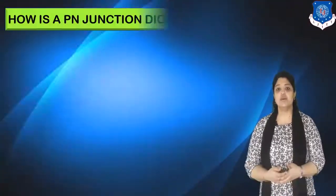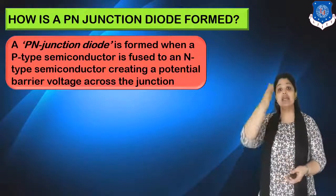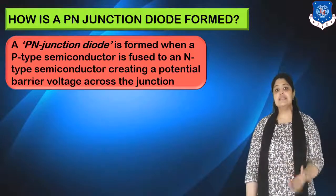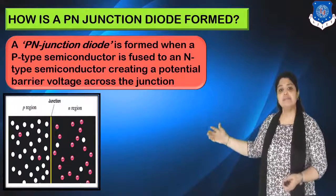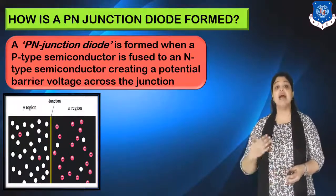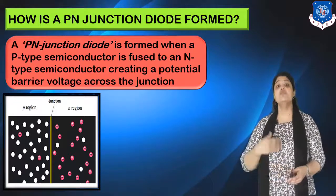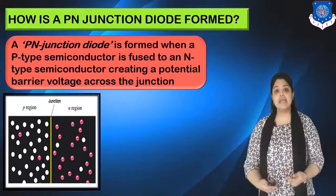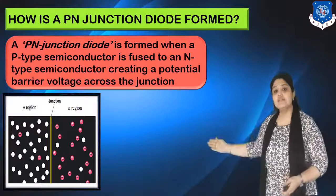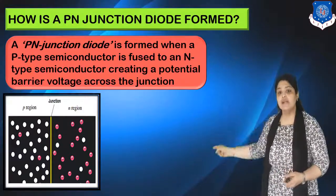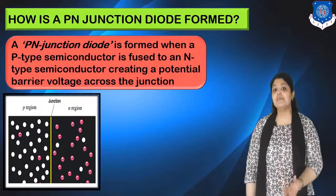A PN junction diode is formed when you fuse a P type semiconductor to an N type semiconductor, creating a potential barrier voltage across the junction. The P type semiconductor has majority carriers as holes, formed by addition of trivalent impurities. The N type semiconductor is formed by pentavalent impurities, so they have electrons as majority carriers. When you fuse them together, the yellow colored line in the diagram indicates the junction — exactly the point where both semiconductors are fused.